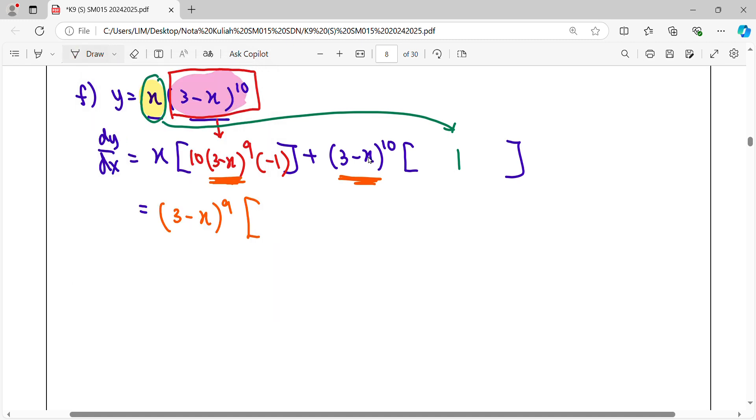So when you take up 3 minus x for the power of 9, here remaining is 10x times negative. Negative 10x. So this one, we already take up the power of 9. So here remaining power of 1.